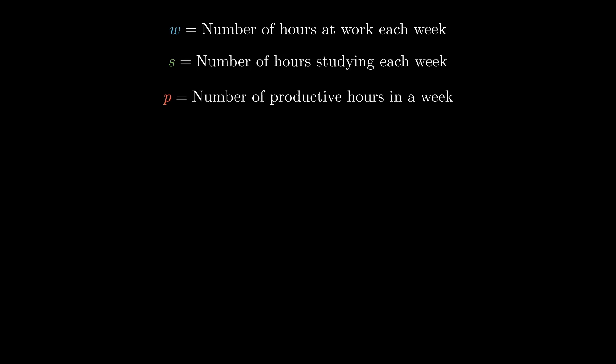We want to maximize p, and p is made up of w and s. We'll assume p equals w, in other words, every working hour is a productive hour, plus 0.8s. In other words, every studying hour is 0.8 productive hours.